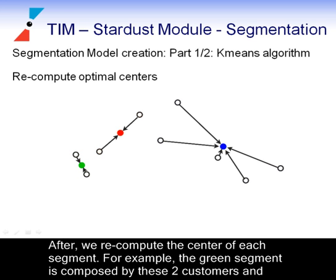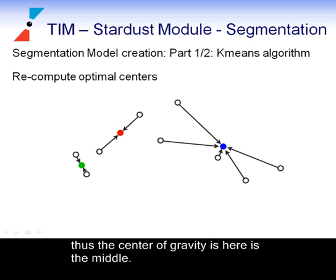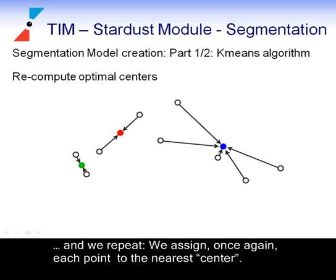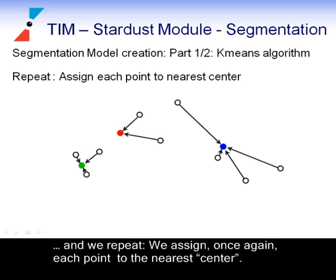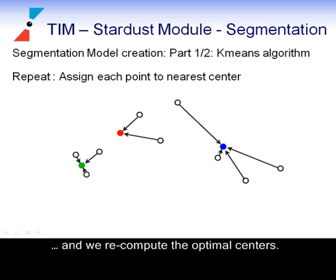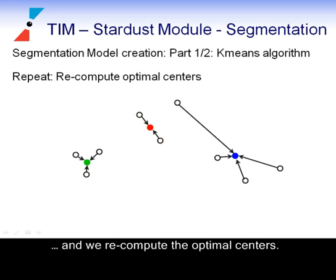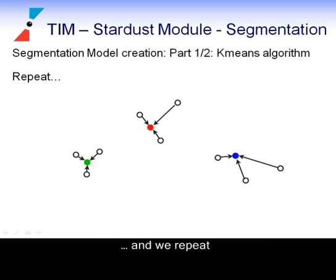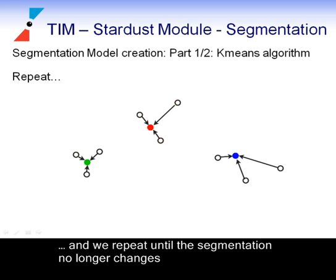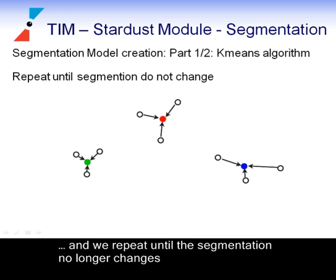After, we recompute the centre of each segment. For example, the green segment is composed by these two customers and thus the centre of gravity is here, in the middle. And we repeat — we assign once again each point to the nearest centre, and we recompute the optimal centres. We repeat until the segmentation no longer changes.